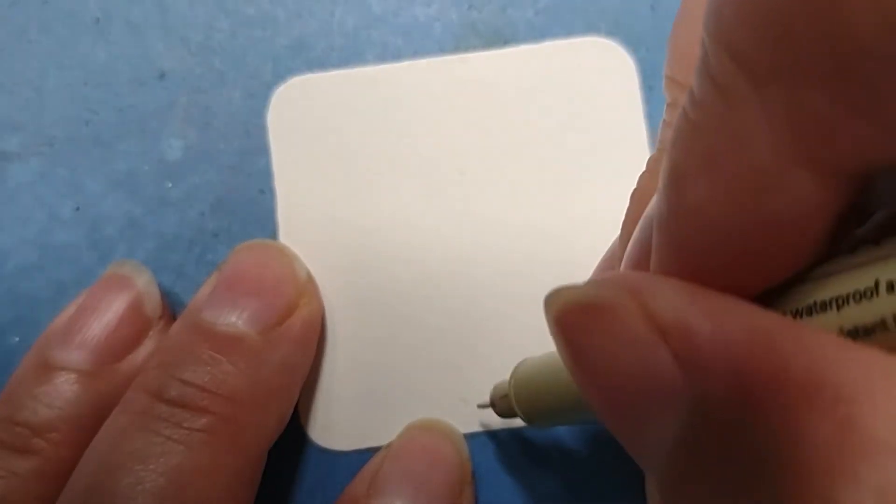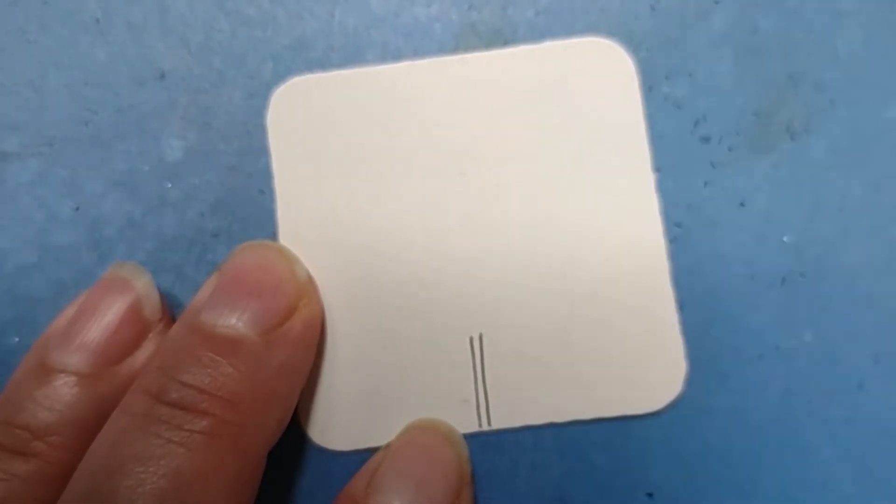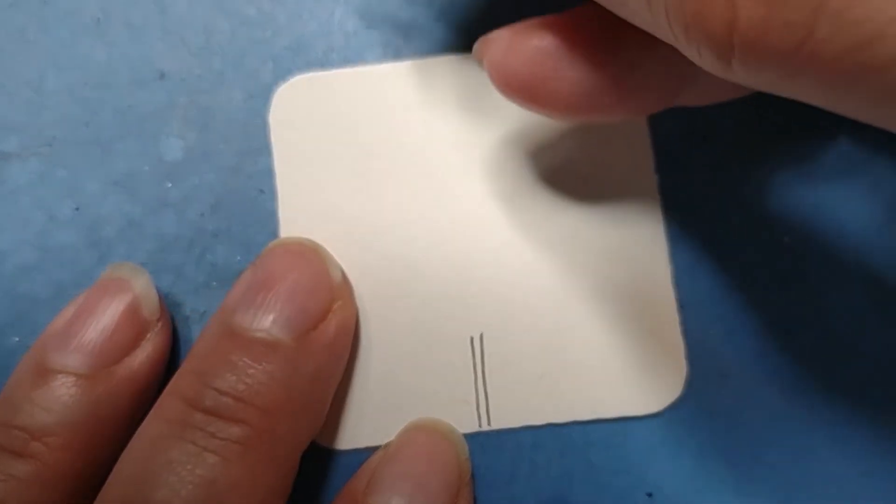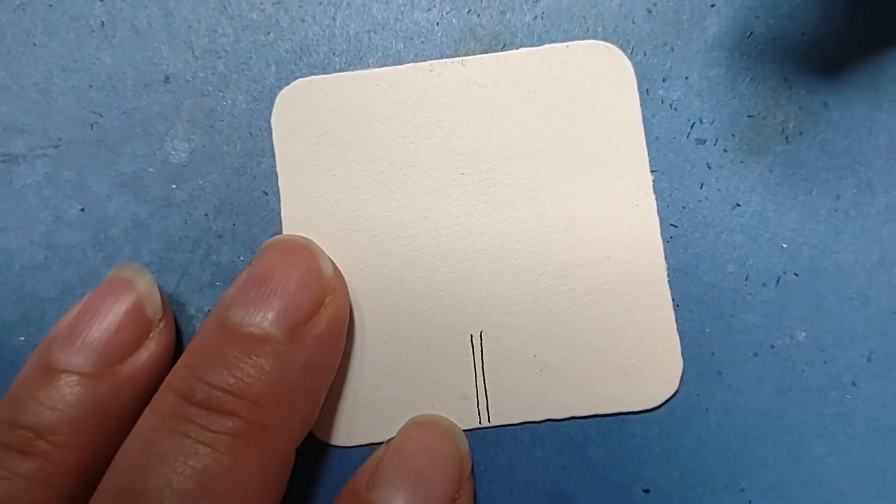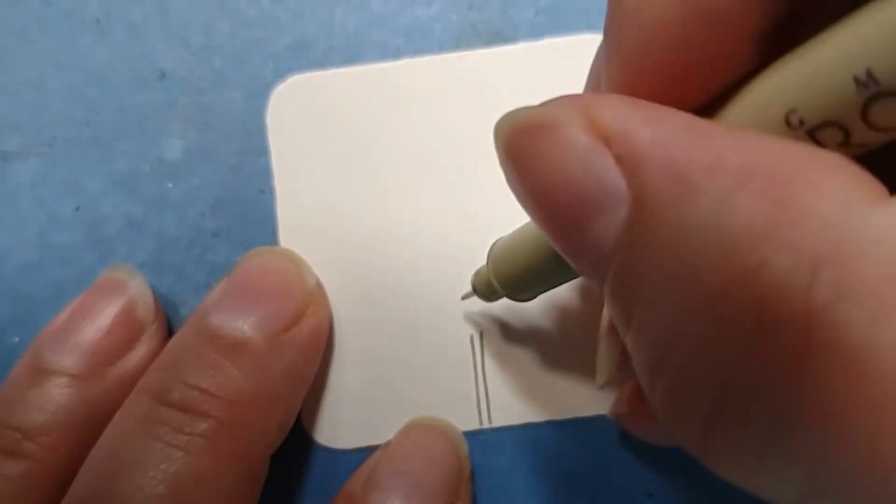I'm actually going to start mine with the stem part first, the two straight lines. I kind of like doing that. She starts hers with the petals first. It's whatever works. Sometimes it might be easier to place those first. Options are good.